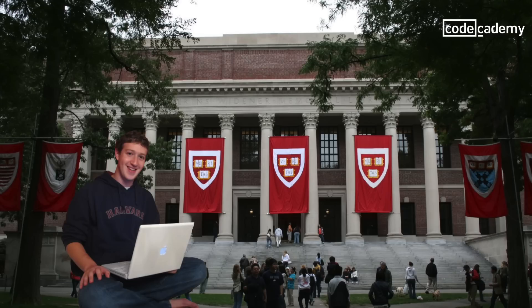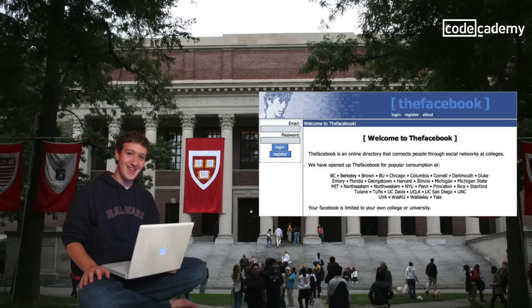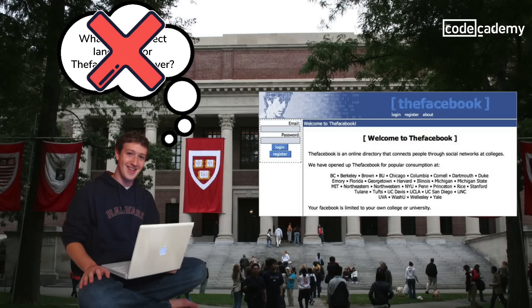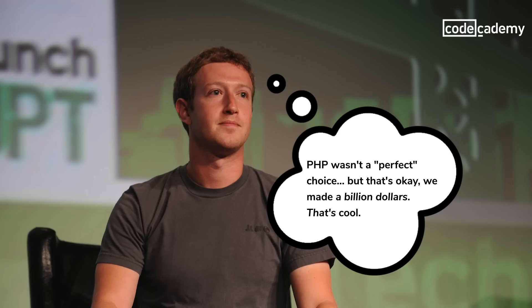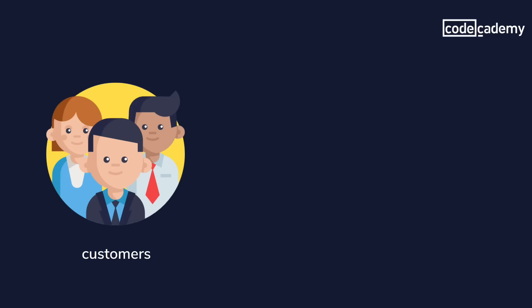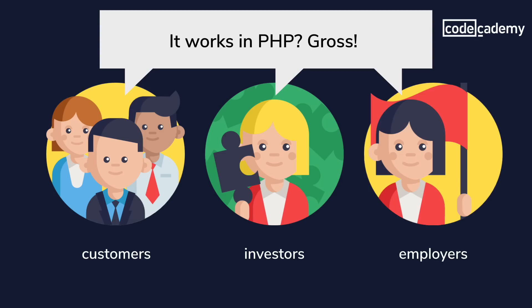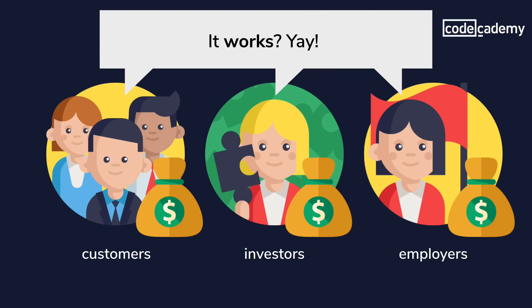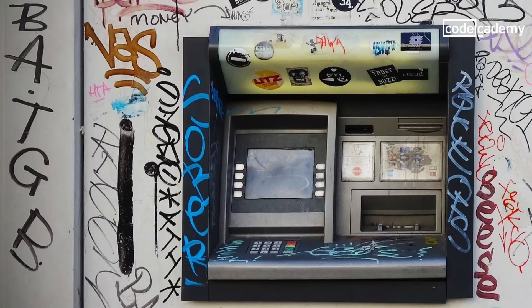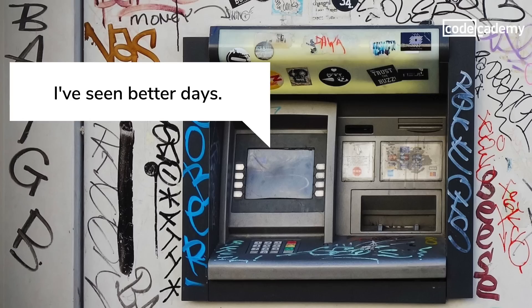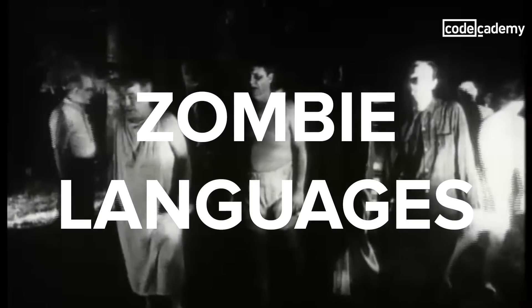For example, when Mark Zuckerberg was in his dorm room coming up with the first version of Facebook, he didn't worry about what would be perfect, but what suited him at the time. As Facebook grew, they were able to change and adapt to their needs. Customers, investors, and employers don't care so much about what your product was built on — what matters is that the software works. That's one reason why what you need to learn might not be what's popular and trending. If you want to program an ATM, you'll need to learn older, lower-level languages like COBOL, which hasn't been popular in decades but is still used in 70% of global financial transactions.